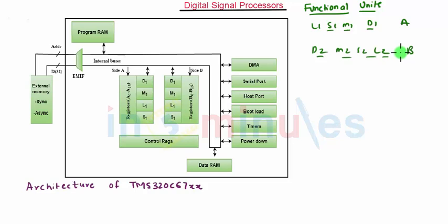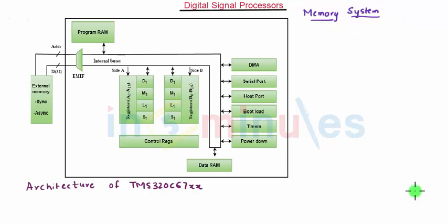Now let us see the memory system of TMS320C67XS series. Now as it is a digital signal processor it uses modified Harvard architecture which provides separate address space for instruction and data memory. Now this processor uses a two level cache based architecture.